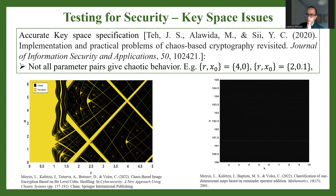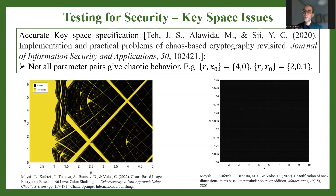For the map on the right, there are specific parameter regions where we have uninterrupted chaotic behavior — as we change the parameters, we don't go in and out of chaos; we only remain in the chaotic regime. This phenomenon is found in the literature as robust chaos.